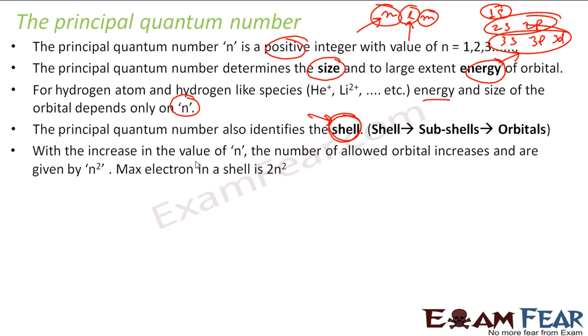With the increase of the value of n, the number of allowed orbitals increase, and it is given by n². Please note, for a given value of n...